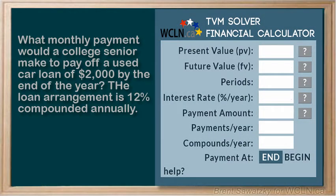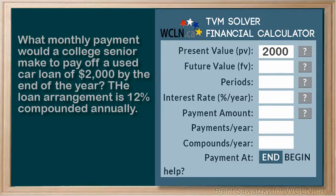We're told that they're paying off a car loan of $2,000. We can picture that loan as coming from the bank into our pocket for a plus $2,000 here. Now the future value — we're making payments and paying this off, so we aim for a future value of zero.